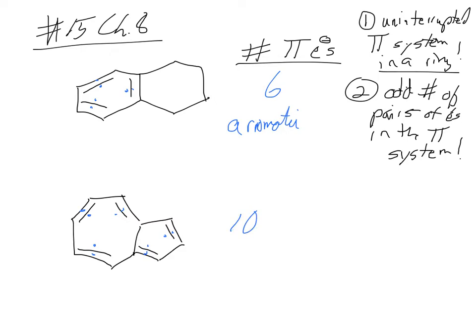Is this an uninterrupted pi system? Are there any SP3 carbons? Nope — SP2, SP2, SP2, SP2, SP2, SP2. So it's all one pi system, all lined up. There are 10 electrons — how many pairs? Five. Is five an odd number? Yes. So this whole molecule is aromatic.